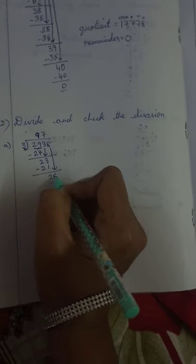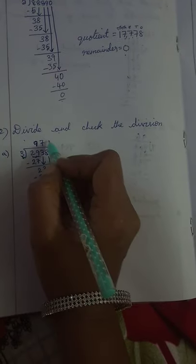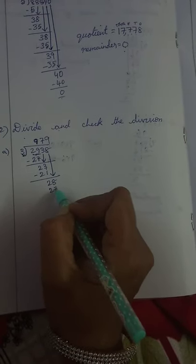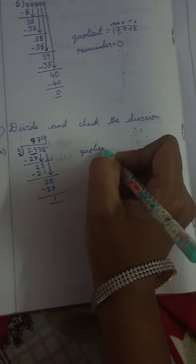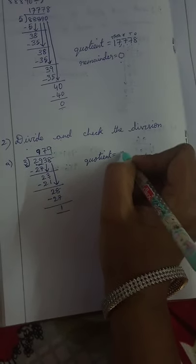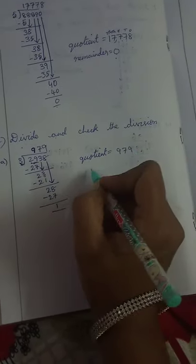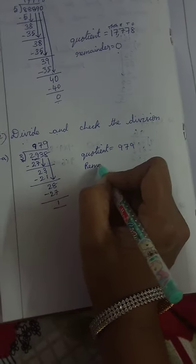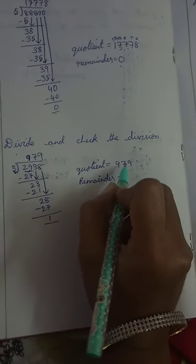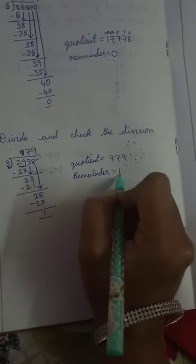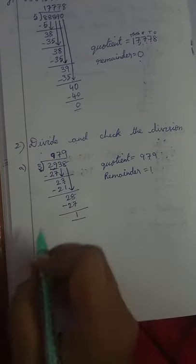Bring down 8. Again, 3 nines are 27, so 28 minus 27 is 1. The quotient is 979 and the remainder is 1. Children, the quotient is 979 and the remainder is 1.